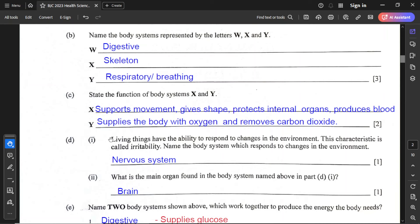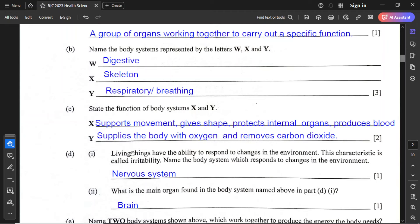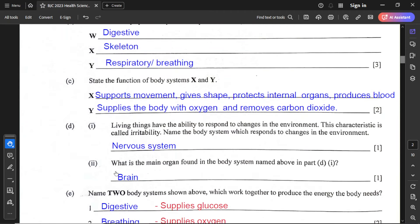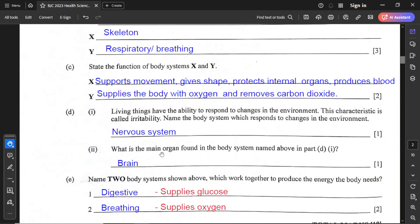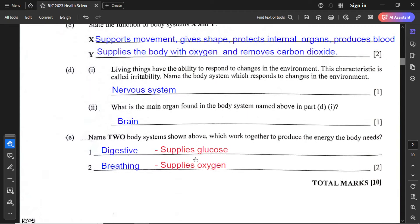For part D1, living things have the ability to respond to changes in the environment. This characteristic is called irritability. Name the body system which responds to changes in the environment. This system is the nervous system. A point to note: the changes within the environment are called stimuli. Part D2 asks what is the main organ found in the body system named in part D1, and that main organ is the brain.